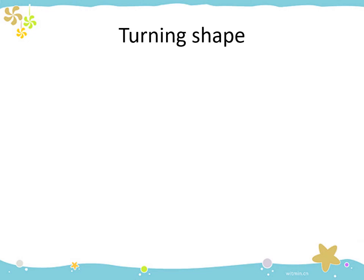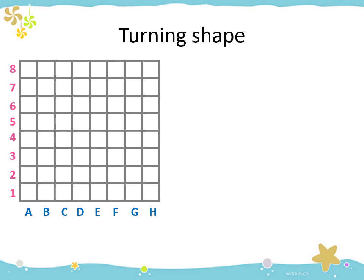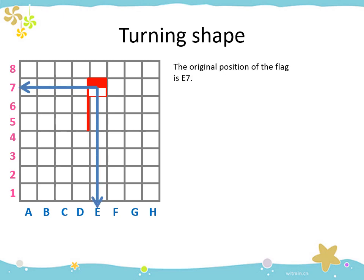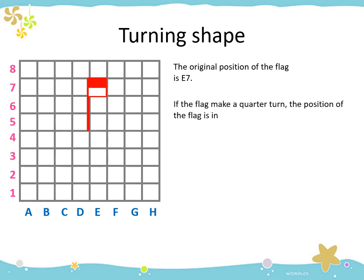Let's continue our lesson to turning shapes. This is our shape — a flag. The original position of the flag is E7. If the flag makes a quarter turn, the position of the flag will look like this — it is G4. The flag's position after making a quarter turn is G4.